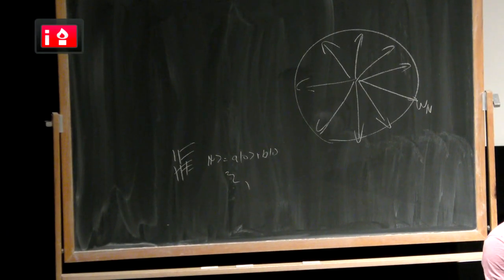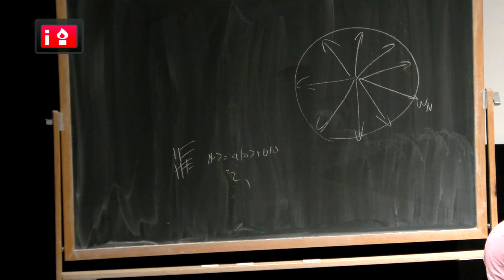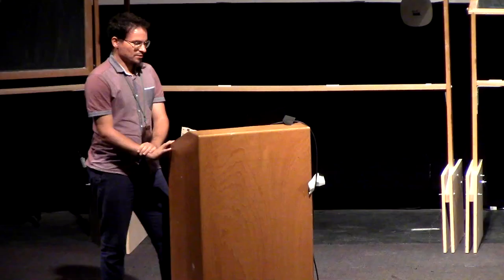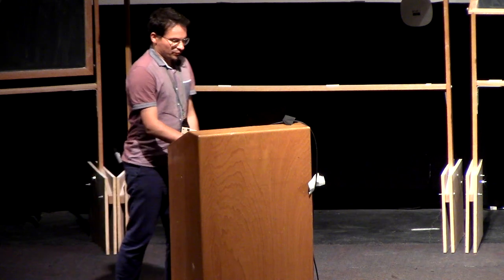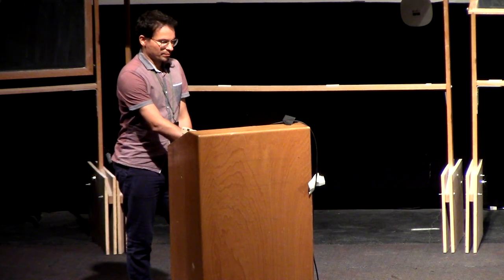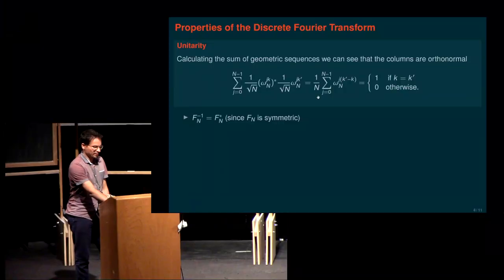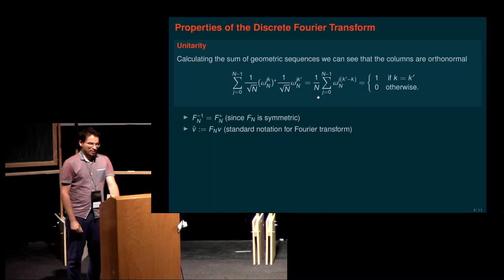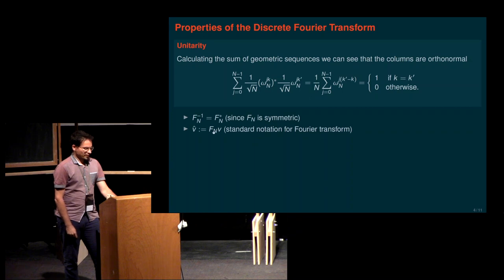Some other properties: this matrix is symmetric, and it's a unitary matrix which is symmetric, so the adjoint equals the conjugate transpose, and therefore the inverse of the Fourier transform is just its complex conjugate - we replace all omega_N's by their complex conjugate, which has the opposite sign in the exponent. For notation, it's common to denote the Fourier transform of a vector by putting a hat on top - so if we had vector v and applied the DFT, the result is denoted v-hat.